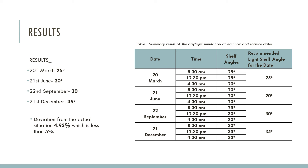From the comparison of the findings, it was found that for 21st March, 25° performs best; for 21st June, 20°; for 22nd September, 30°; and for 21st December, 35° angular light shelf performs best, as shown in the table. Though on 20th March and 22nd September the position of the sun is similar, due to different sunshine hours and different cloud covers the optimal angles of the light shelves differ. An average deviation of approximately 4.93%, which is less than 5%, was found between simulation results and actual field measurements with a lux meter.